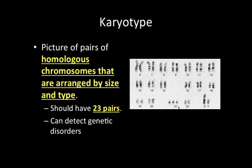Here we notice an abnormality — there is a third 21st chromosome. That extra 21st chromosome is a label for Down syndrome, so this particular individual will be afflicted with Down syndrome, as we can see by looking at the karyotype. This can be done through amniocentesis, where we take amniotic fluid out of the mother's womb and utilize that fluid to make a karyotype out of the fetus's genes. As a result, we're able to see if they may or may not have a particular type of genetic disorder.